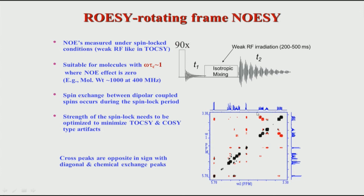By the time you apply the isotropic mixing spin lock, the spin starts relaxing towards the z-axis very quickly, so the signal intensity at detection is very low. The overall sensitivity of ROESY is less compared to NOESY. Therefore, ROESY is resorted to only if you are not able to get a good NOESY. Otherwise NOESY is still preferred, because if you control your mixing time properly, spin diffusion is not such a big problem, and NOESY is more sensitive than ROESY.